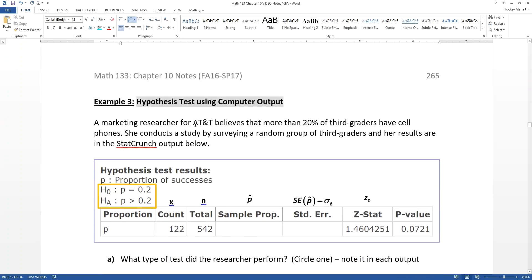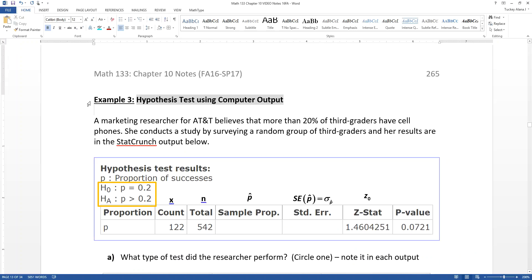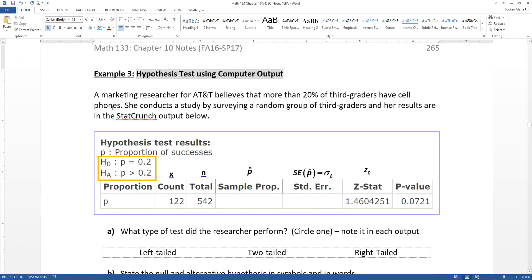Now we're going to begin this next question, example three, but we're not going to finish it because it's three pages. So it's going to take us a while. We're going to start it in this video and we'll finish it in the next one. So we have a hypothesis test here. A market researcher for AT&T believes that more than 20% of third graders have cell phones. She conducts a study by surveying a random group of third graders and her results are in the StatCrunch output below.